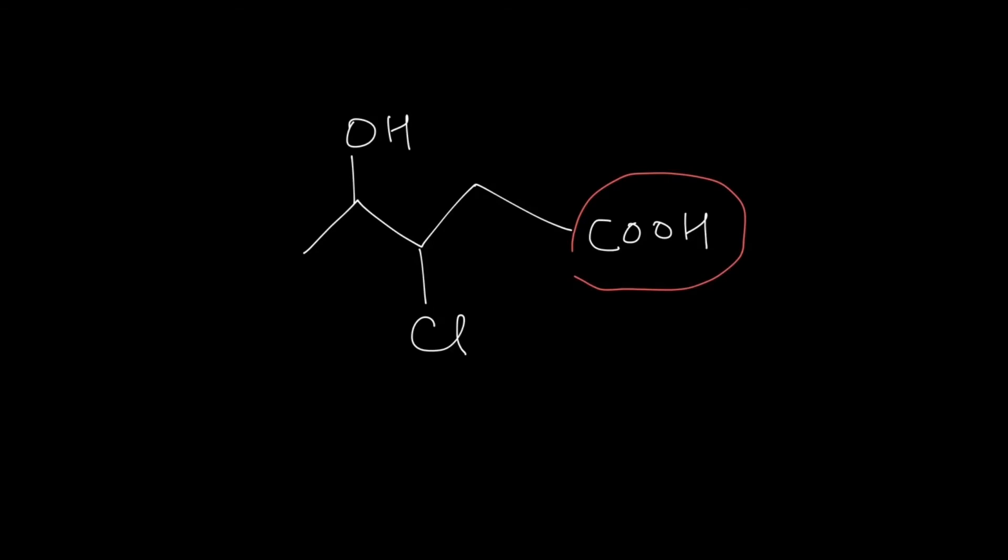So now that we have identified the primary functional group, let's look at the parent chain. And the parent chain, if you watch carefully, is this. That means there are two groups that are not part of the parent chain and that are not the functional groups. One is the chlorine over here, and another is the OH group. Now these two groups are what we call substituents.